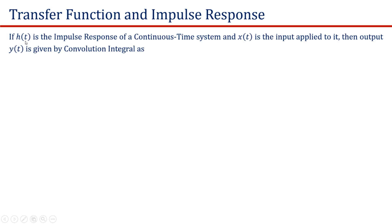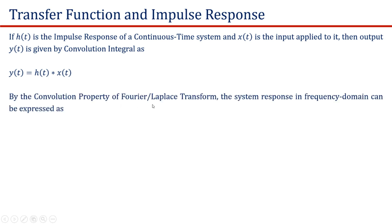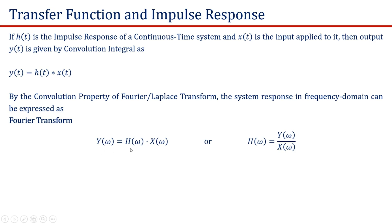Now let us consider the transfer function and impulse response relationship. If h(t) is the impulse response of a continuous-time system and x(t) is the input applied to it, then the output y(t) is given by the convolution integral as y(t) is equal to h(t) convolved with x(t). By the convolution property of the Fourier transform and Laplace transform, the system response in the frequency domain can be expressed as — using the Fourier transform — Y(ω) is equal to H(ω) multiplied by X(ω). This is the property of the Fourier transform that convolution in the time domain is converted into simple multiplication in the frequency domain.